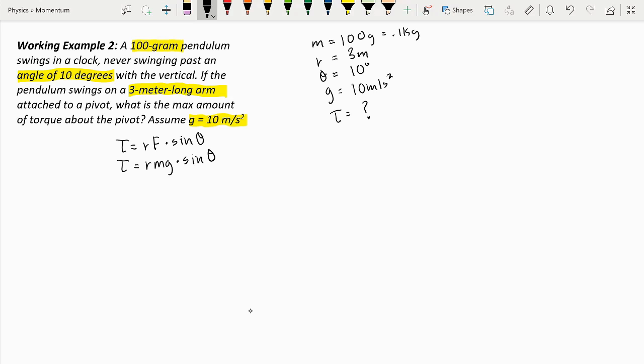So the radius is 3 meters. We multiply it by the mass, 0.1 kilograms. Then we multiply that by the gravity, 10. And then we multiply that by sine 10 degrees, which is 0.17.